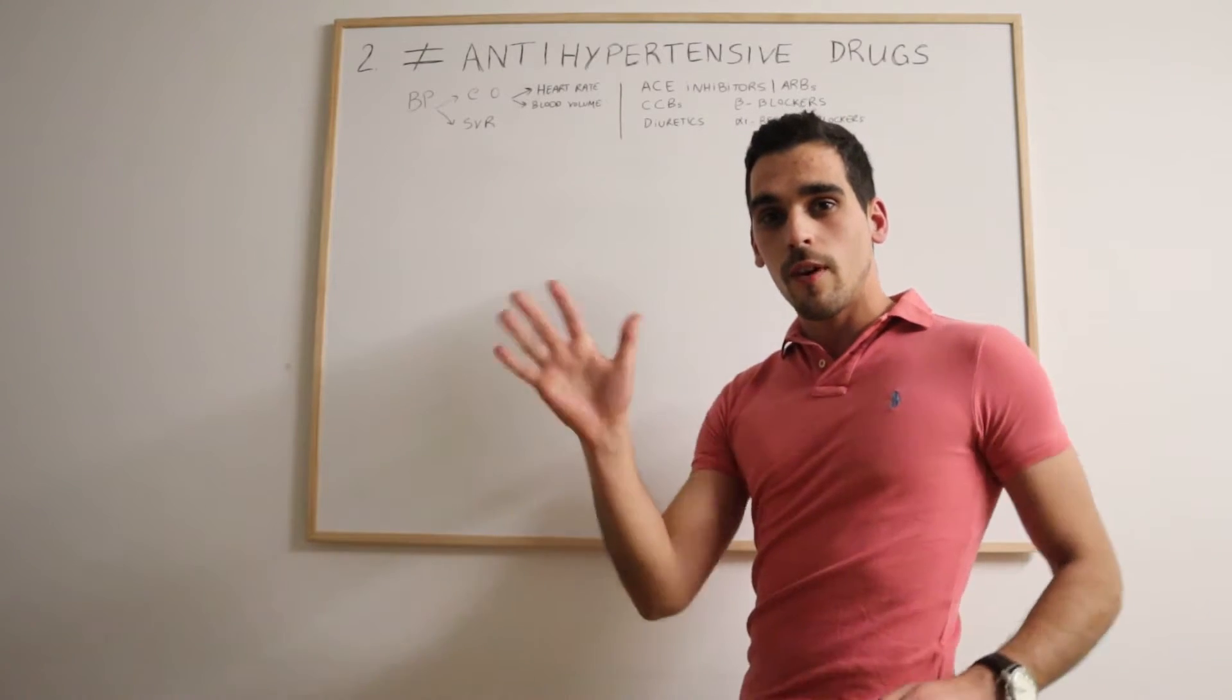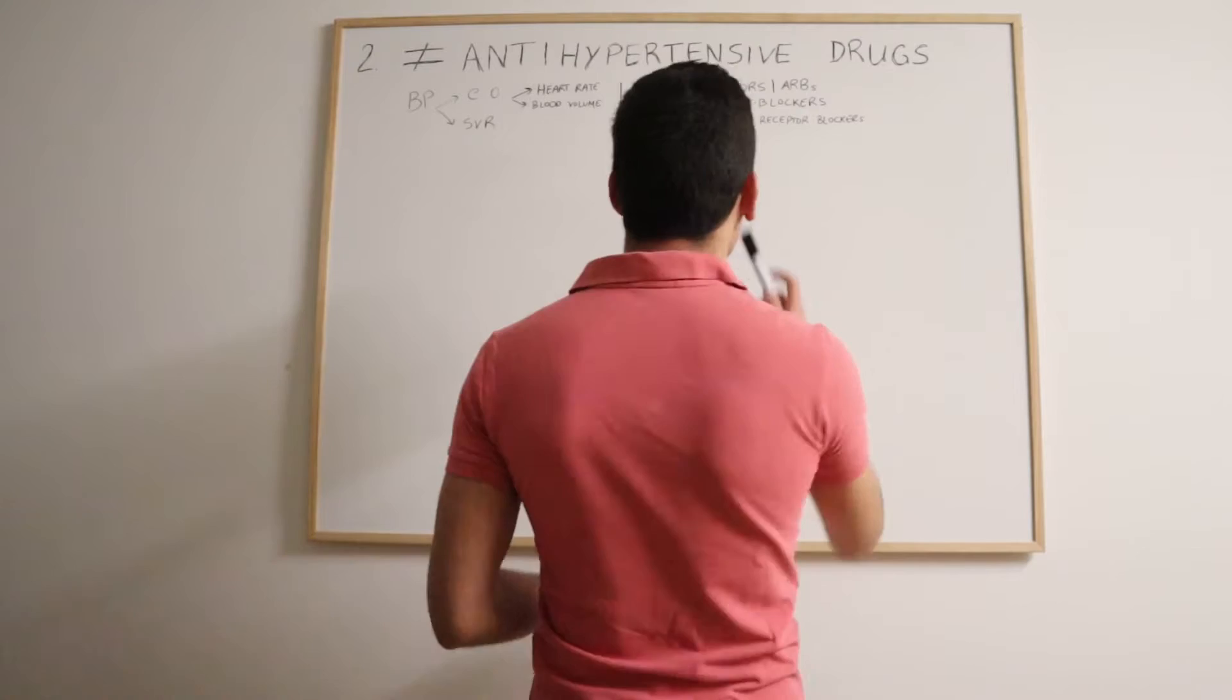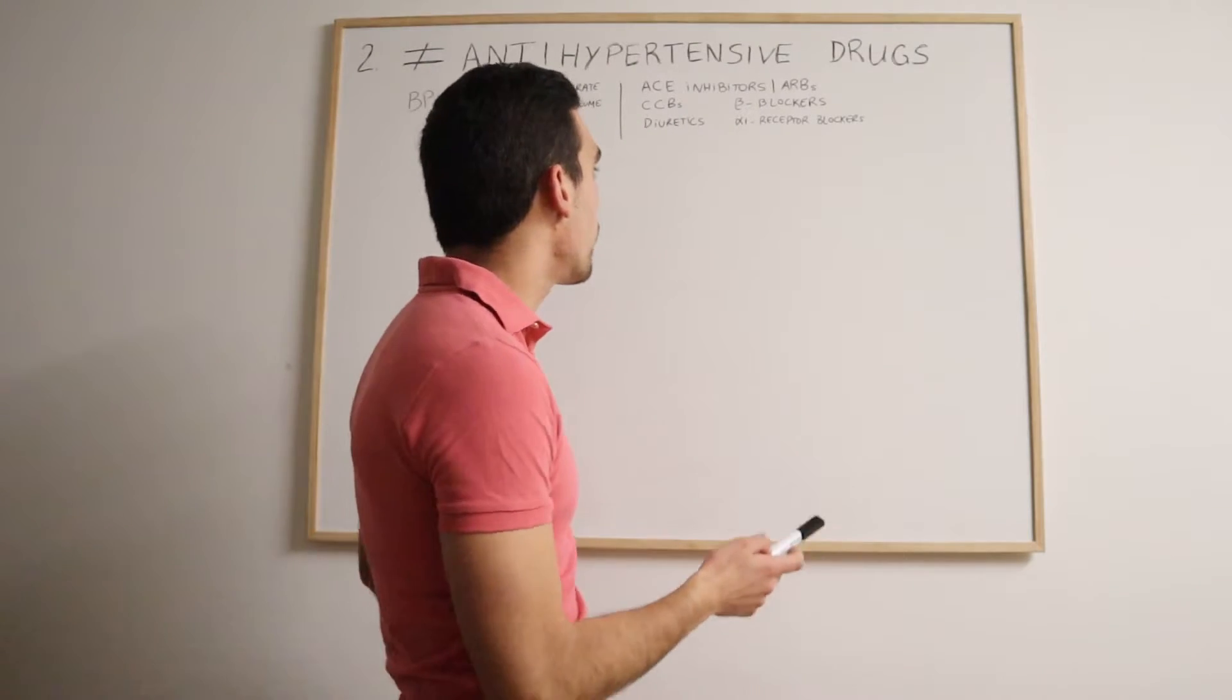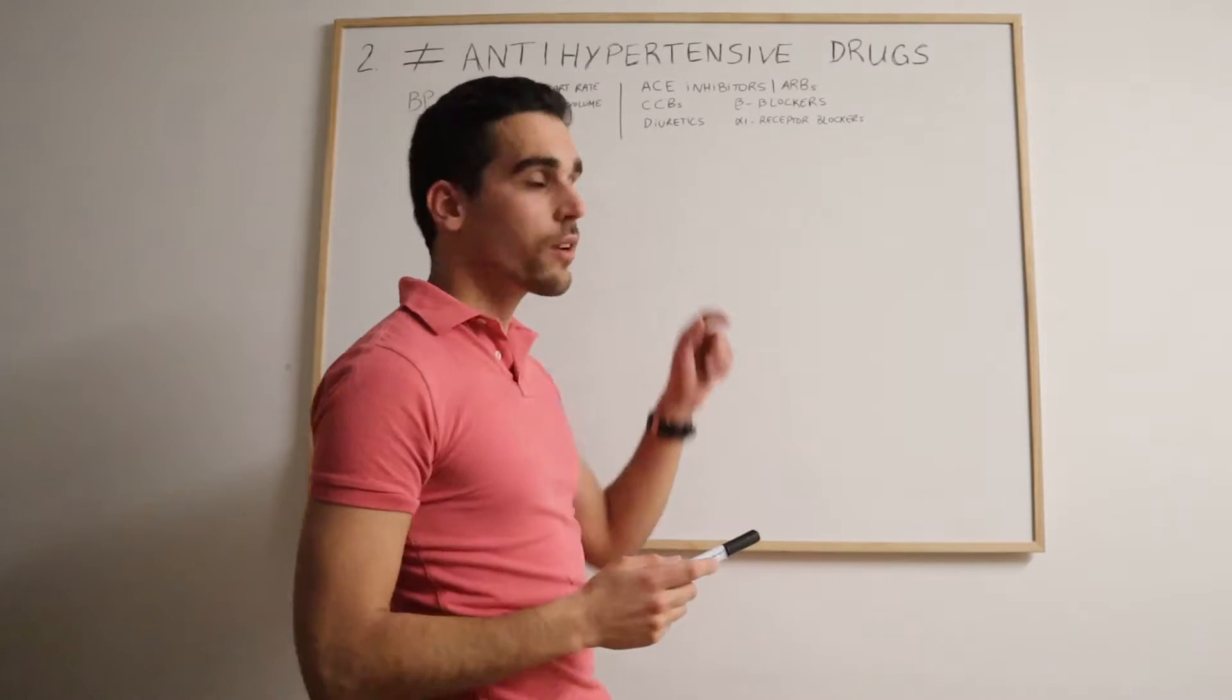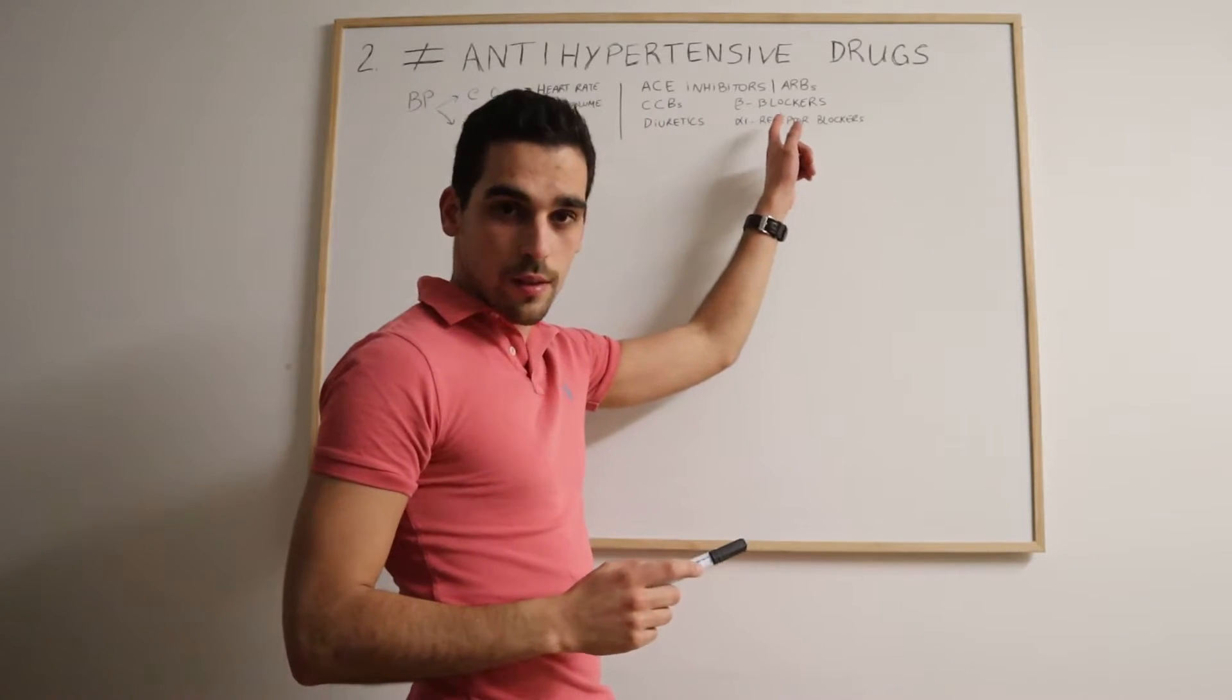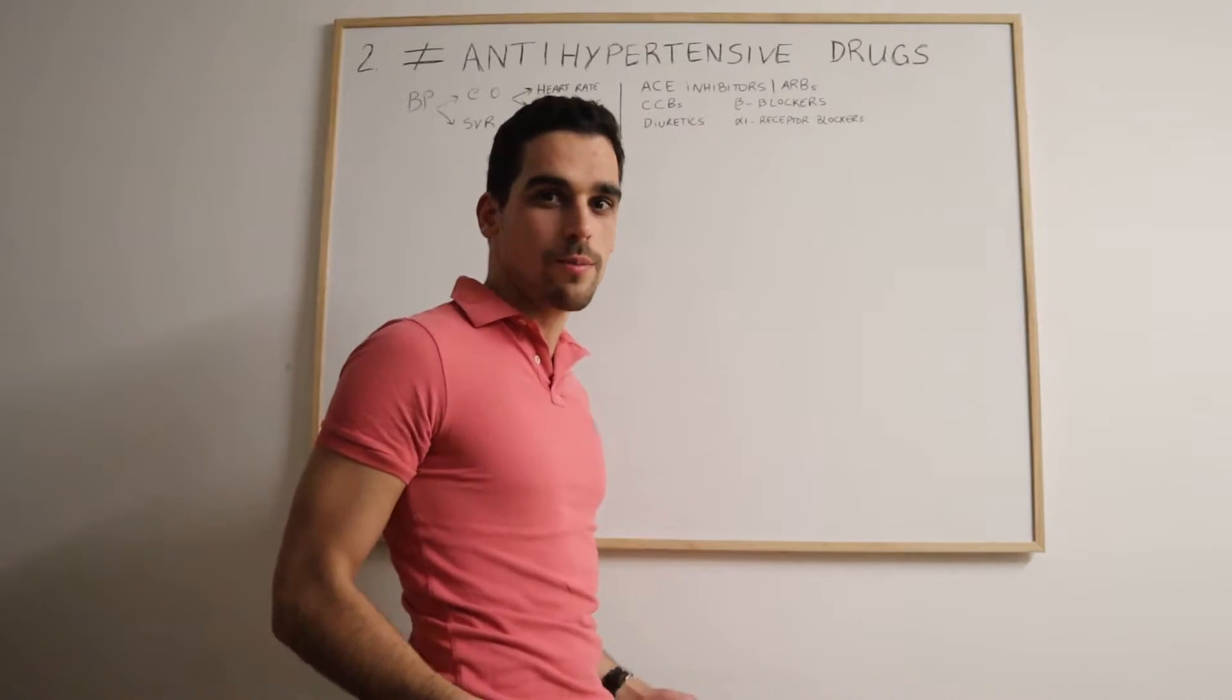We'll talk about five main antihypertensive drugs. We'll talk about ACE inhibitors, angiotensin receptor blockers, calcium channel blockers, beta blockers, diuretics, and finally the alpha-1 receptor blockers.